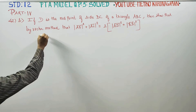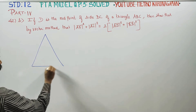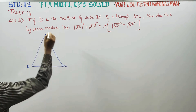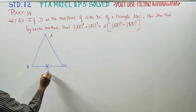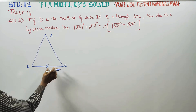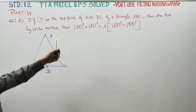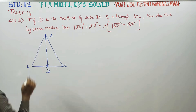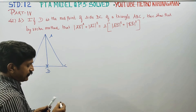D is the midpoint of the side BC. Draw a triangle ABC. It is given that D is the midpoint of side BC. D is the midpoint — midpoint means equal. I am going to find AB vector.